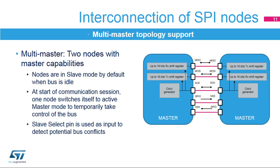The master node has to provide sufficient time between data to allow these internal transfers. An SPI network can also operate in a multi-master environment. This mode is used to connect together two master nodes exclusively. By default, both nodes are in slave mode as long as the network is idle. When one node wants to take control of the bus, it switches itself into master mode and asserts the slave select signal on the other node through a GPIO pin. Both slave select pins work as a hardware input to detect potential bus collisions between nodes, as only one master can use the SPI bus at a single time. After the session is completed, the master node releases the slave select signal and returns to passive slave mode, waiting for the start of the next session.